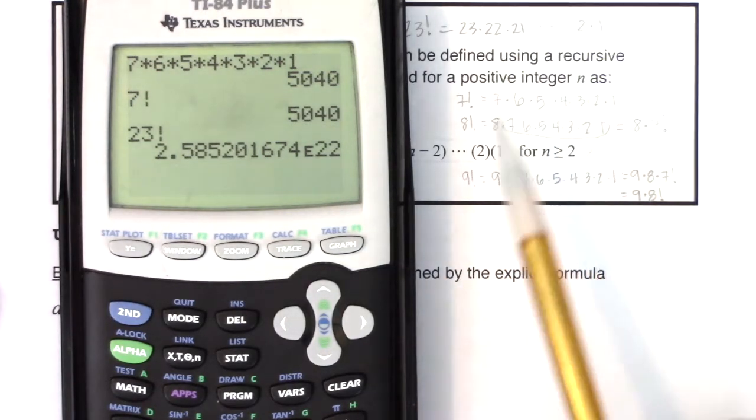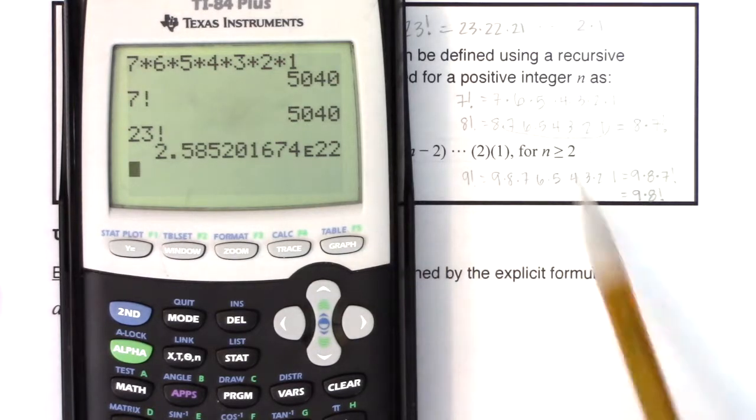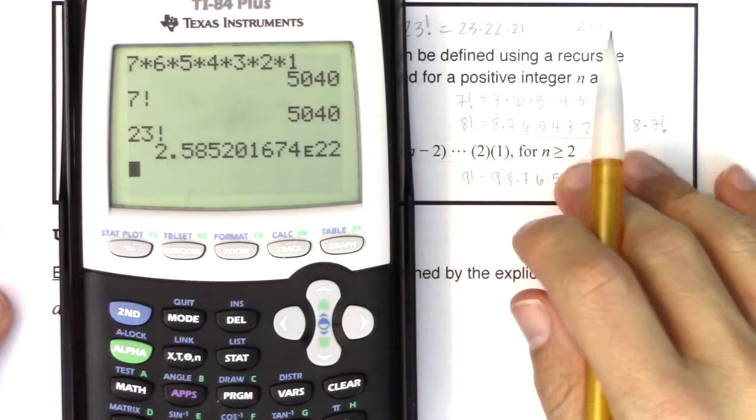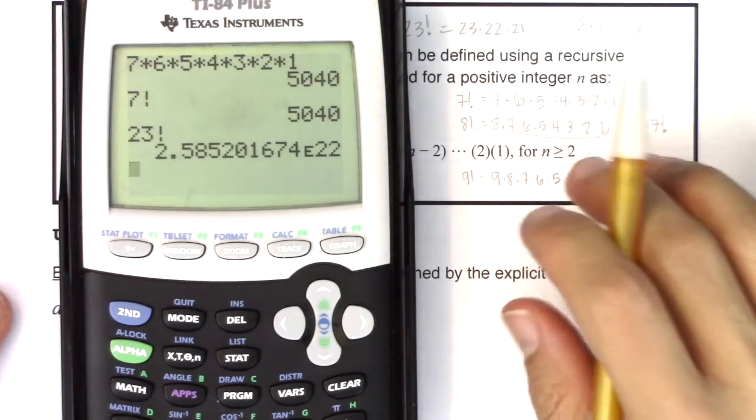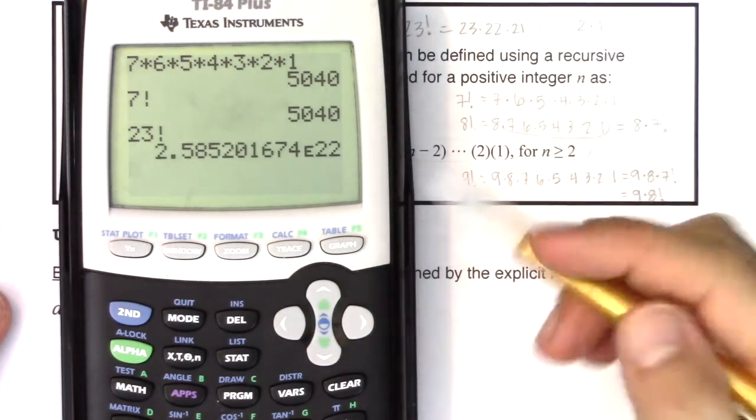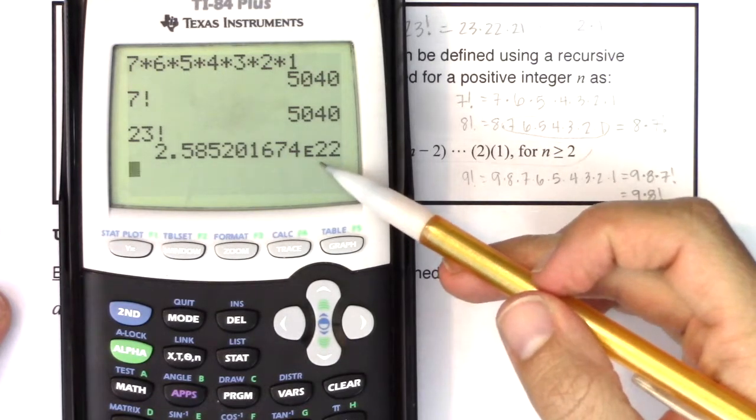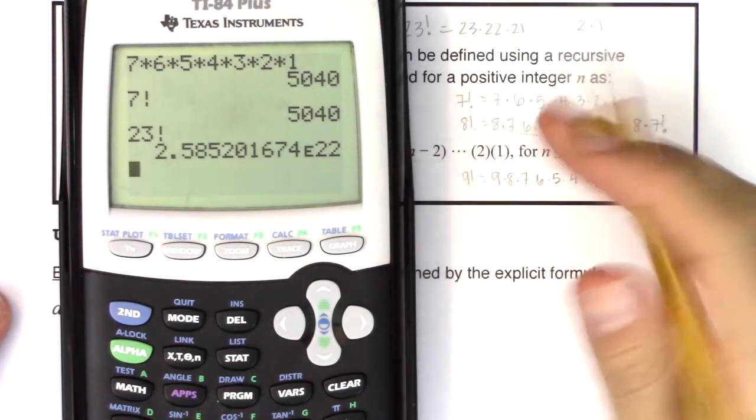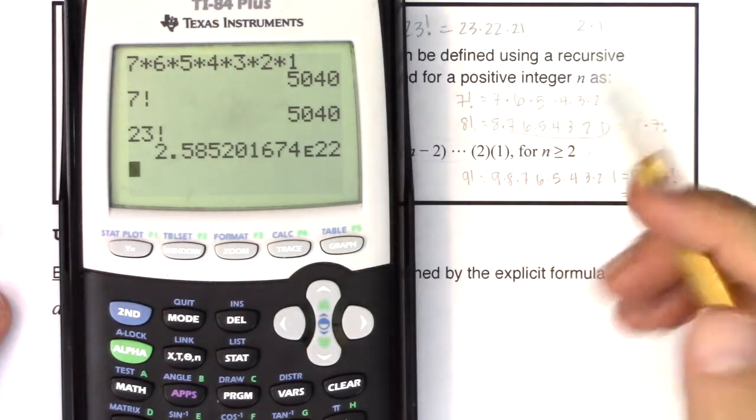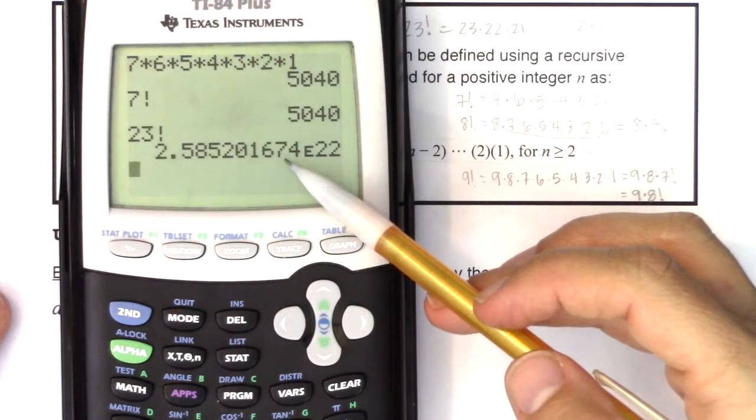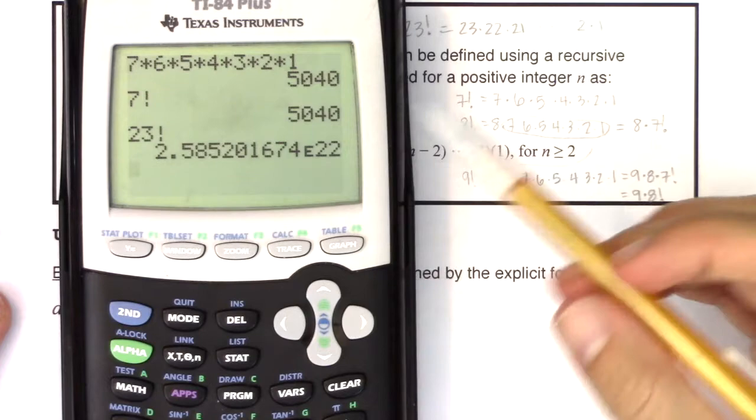So hit math, go over to PRB option four. Look at that number. That is huge. That is 2.585 with 22 zeros after it. So I would love to make 23 factorial dollars this year. It's just not going to happen. Now factorial growth is actually faster than exponential growth. So when I talk about how I'd love to make factorial dollars, if you ever ask your boss for a raise or get put on some kind of pay scale, ask yourself for a factorial raise every year.